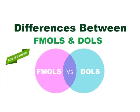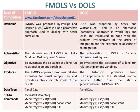Differences between FMLS and DOLS. FMLS was proposed by Phillips & Hansen, 1990, which is a non-parametric approach used to deal with serial correlation.